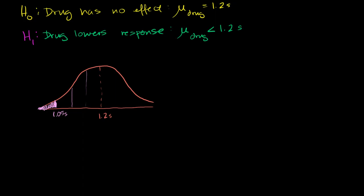So if our null hypothesis is true, the probability of getting a result more extreme than 1.05 seconds, now we are only considering this tail right over here. Let me put it this way. More extreme than 1.05 seconds, or let me say, lower.